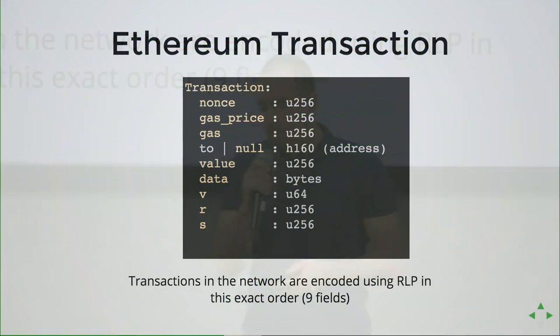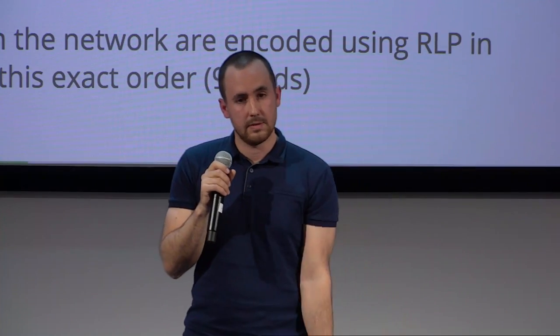The nonce is stored on the blockchain as part of the account state. In total, this is what a transaction looks like: we have nonce, gas price, gas, optional recipient, value, data, and a signature with V, R, S. Transactions broadcasted between peers look like this but are RLP-encoded — Recursive Length Prefix — a format used by Ethereum almost everywhere.